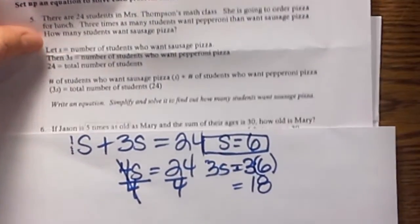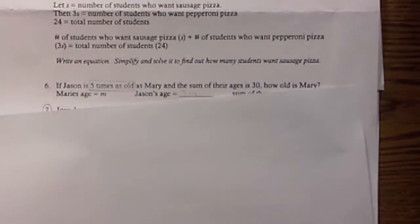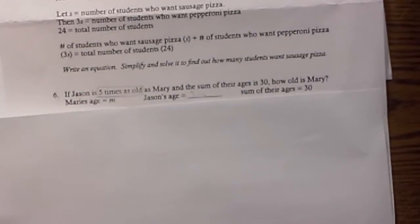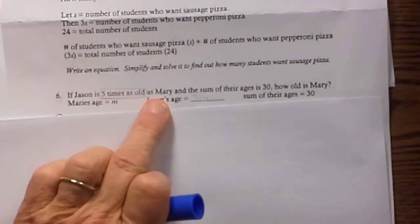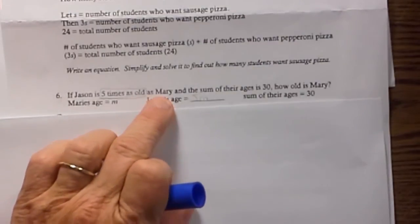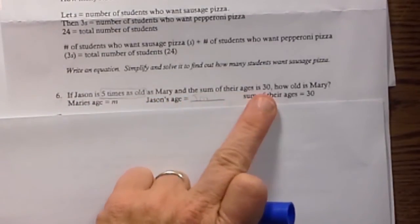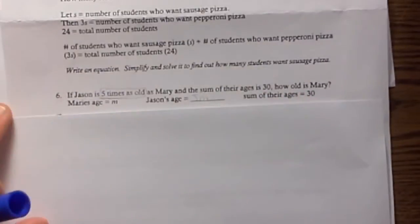Okay, so let's look at another word problem. We have, Jason is 5 times as old as Mary. And the sum of their ages is 30. How old is Mary?